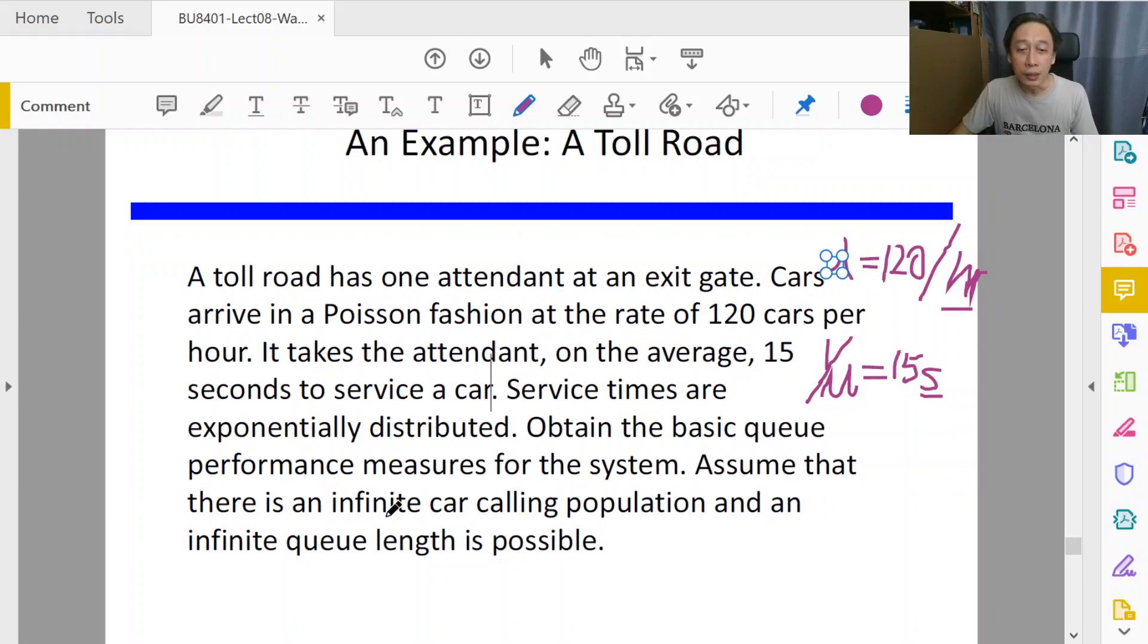Assume that service times are exponentially distributed, so that's telling us the middle letter is M, and we have one server. In this course we will always have exponentially distributed inter-arrival times, but the question needs to indicate that as well to be proper. They said cars arrive in a Poisson fashion, so the arrival rate follows Poisson distribution, hence the inter-arrival time follows exponential. That's good enough for us to say the first letter is M.